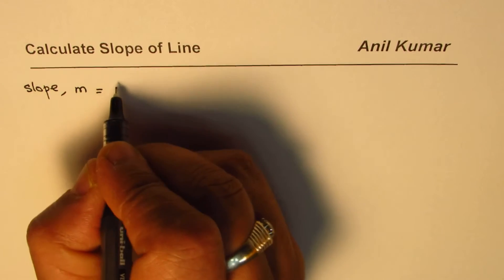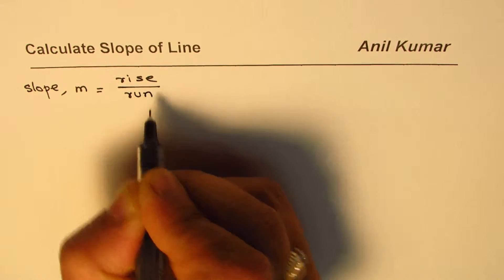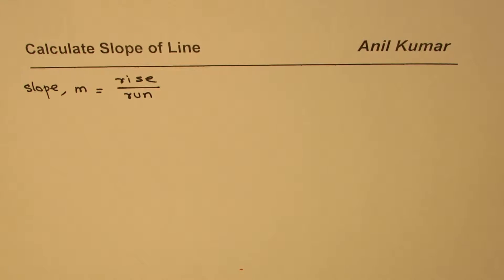Slope of a line is written as rise over run. That is the general description for finding slope of a line.